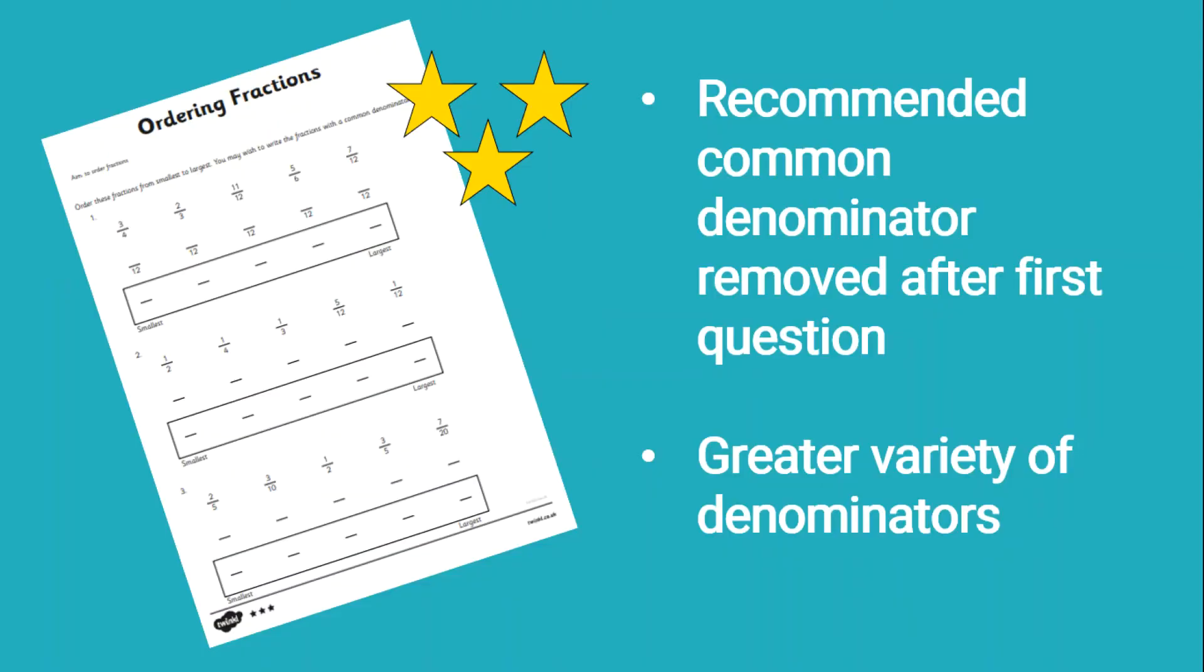On star sheet 3 the suggested common denominator is removed after question 1 and there is a greater variety of denominators across the questions.